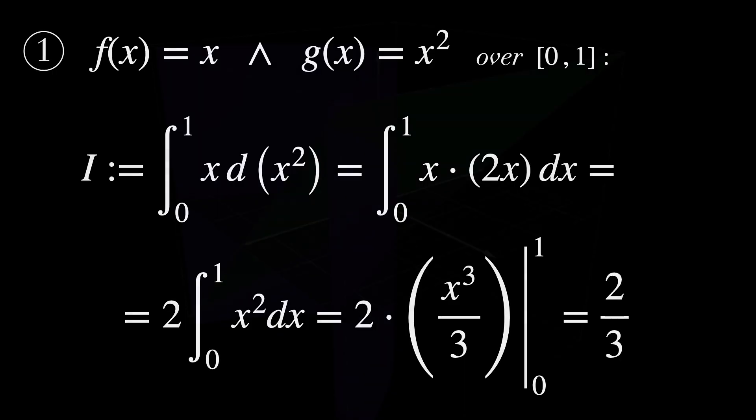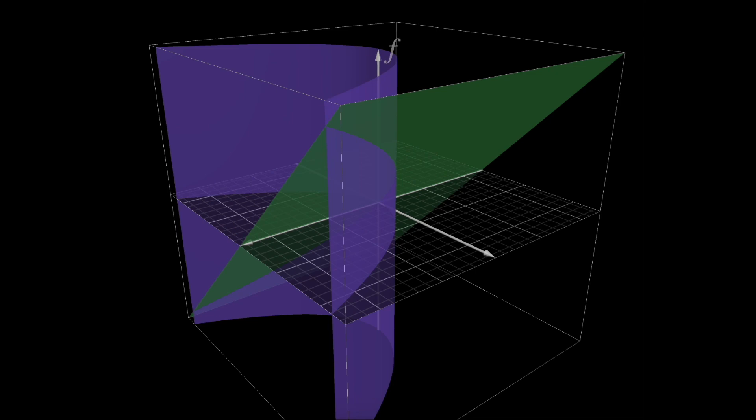Okay, that was not hard, but how can we interpret this result geometrically? We start by defining these three axes: f, g, and x.